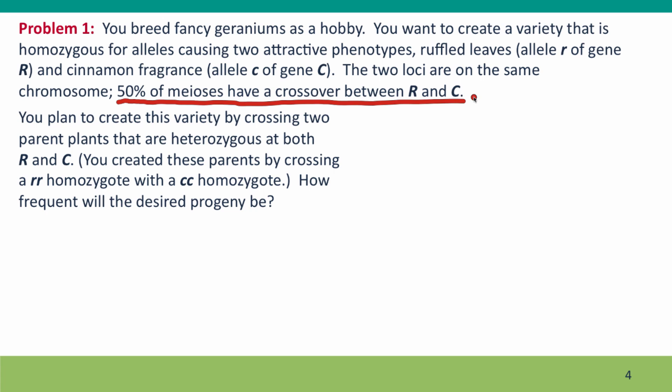Your plan is you're going to create this variety by crossing two parent plants that are both heterozygous at the R and C loci. And you're told that you made these parents by crossing an rr homozygote with a cc homozygote. You have to calculate how frequent will the desired progeny, homozygous for little r and homozygous for little c, how frequent will that progeny be among all the other offspring?